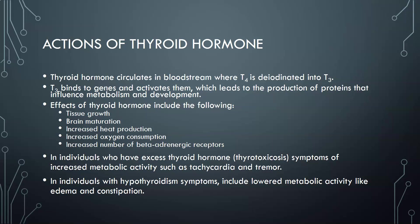Thyroid hormone circulates in the bloodstream, where T4 is converted to T3, the active form. T3 enters cells throughout the body, binds to genes, and activates them, leading to production of proteins that influence metabolism and development. Effects include tissue growth, brain maturation, increased heat production, increased oxygen consumption, and increased number of beta-adrenergic receptors. In individuals with excess thyroid hormone — such as thyrotoxicosis or hyperthyroidism — symptoms include increased metabolic activity, tachycardia, tremors, feeling hotter, anxiety, and difficulty sleeping.